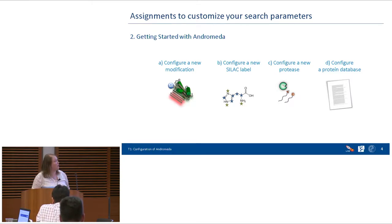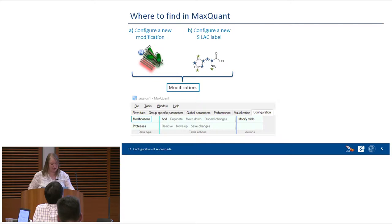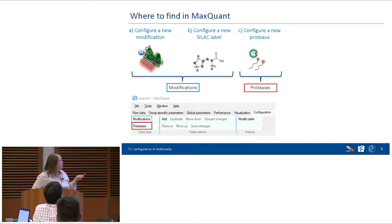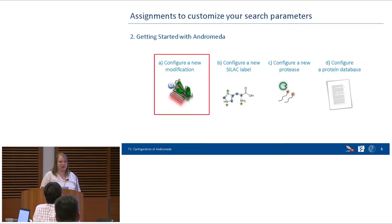We are going to configure a new modification, a new SILAC label — histidine 8 — a new protease, and then a database. As a quick overview of where to find these in MaxQuant: modifications and labels are found in the Configuration tab at the very end. For proteases it's the same — Configuration, then Proteases. For the database, go to Global Parameters and then Sequences.